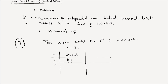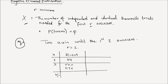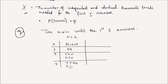X could also take a value of 3, and that happens with the following events: tails-heads-heads, or heads-tails-heads — both give you two successes. X could be equal to 4 if you have tails-tails-heads-heads, or tails-heads-tails-heads, or heads-tails-tails-heads. Those events give you X equals 4, because you need four trials to observe your first two successes.